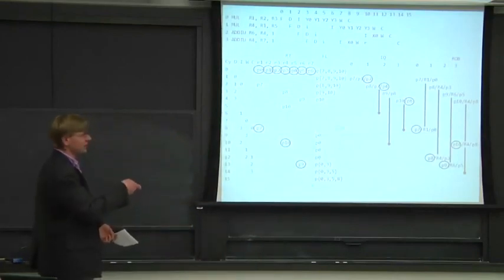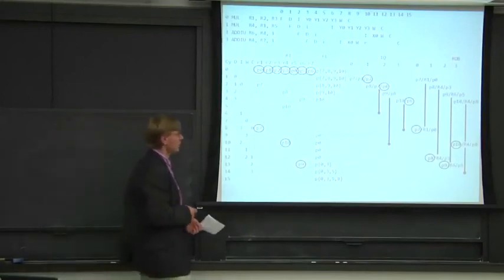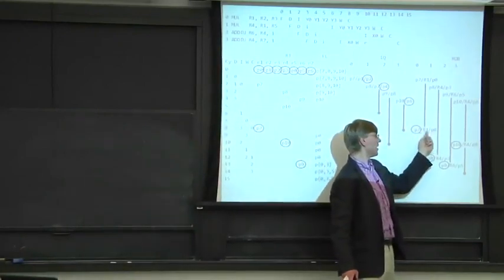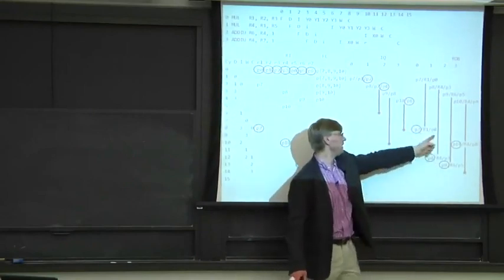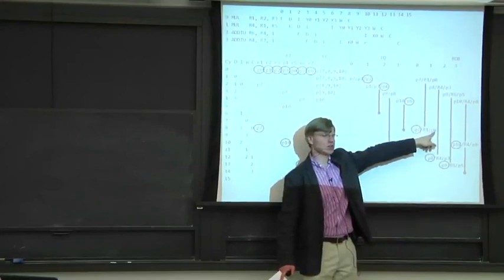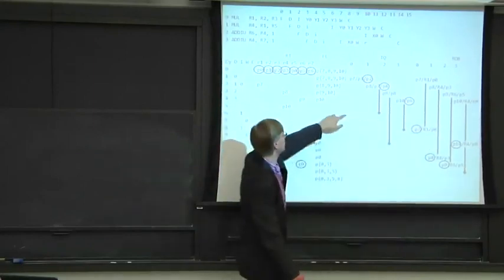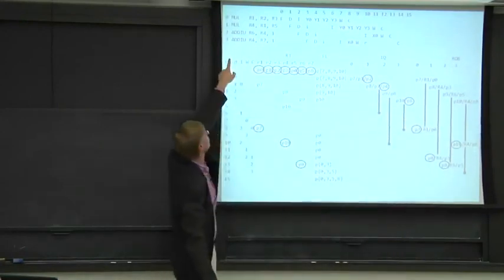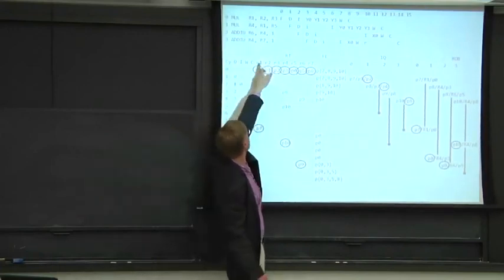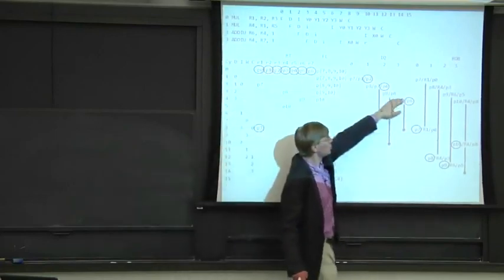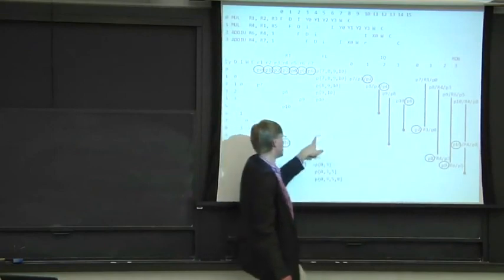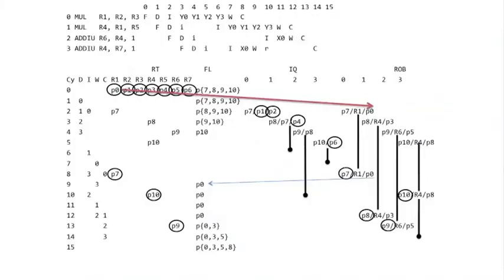Let's look at how things get put back on the free list. In the reorder buffer we stored the previous physical register for each instruction. For the first instruction — the multiply — R1 was previously in P0. So when that instruction commits, we put P0 back onto the free list. But it seems like you should be able to deallocate earlier. We'll look at a test case showing why you can't do it early.